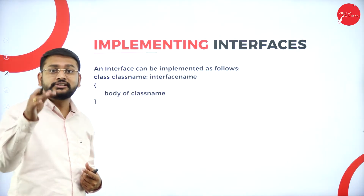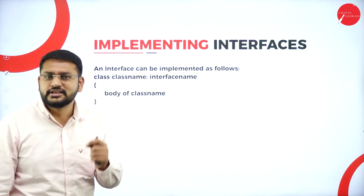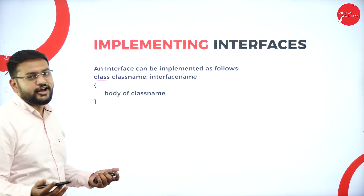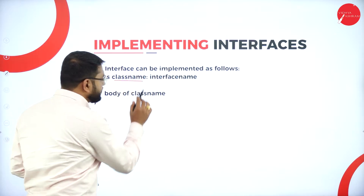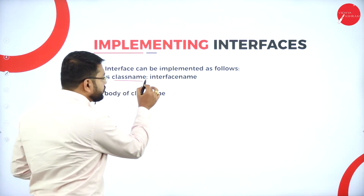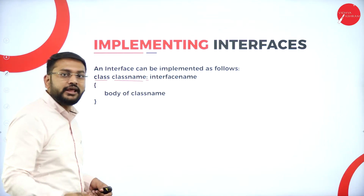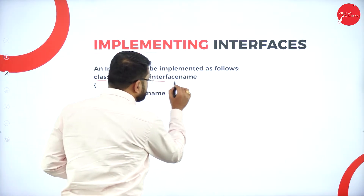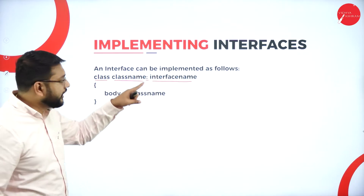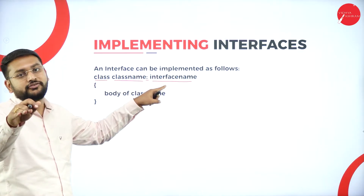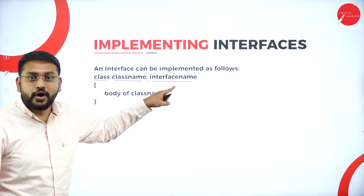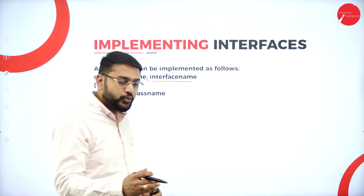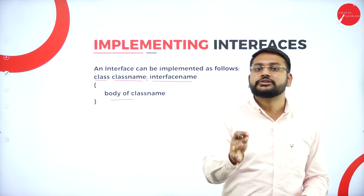I have a solution. This is how we implement interfaces. What syntax should I use? I should use a class to implement the interface. I have to use the keyword 'class' as usual, followed by the name of the class. Most importantly, you have to use the colon after the class name, followed by the interface name you want to implement. You don't have to write the keyword 'interface' here — just write the name of the interface. Then you mention the body of the class. This is how you implement any interface using a class.